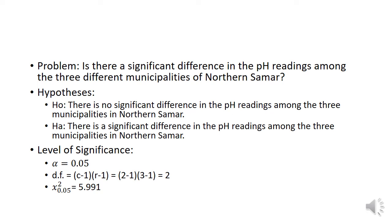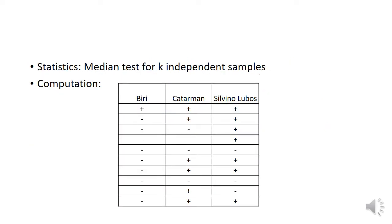For the degrees of freedom, we will be using 2 — I will explain later how we arrived at 2. For our chi-square tabular value at 0.05, we have 5.991. For our test statistic, we will be using the median test for K-independent samples.